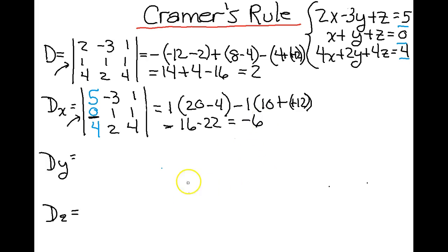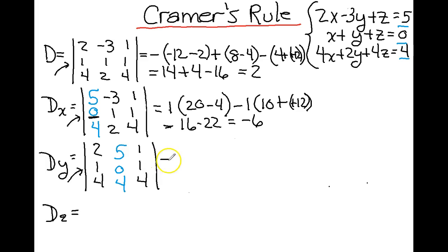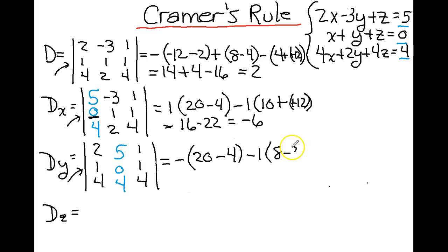Let's go ahead and calculate D sub y. We replace the coefficients of y with the numerical values of our equations. The middle row looks easiest again. We subtract our first minor, which gives 20 minus 4. We don't need to calculate our second minor, which we would have added. We subtract our third minor, which gives 8 minus 20. So we get negative 16, and negative 12 times negative 1 is positive 12, giving us negative 4.